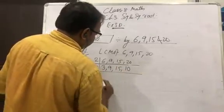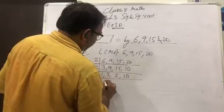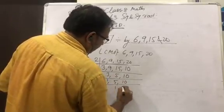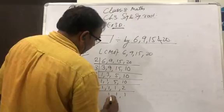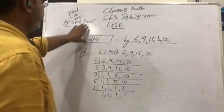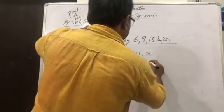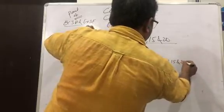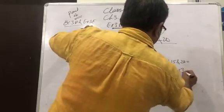Now we divide by 3, giving 1, 3, 5, and 10. Then divide by 3 again: 1, 1, 5, and 10. Then divide by 5: giving 1, 1, 1, and 2. So the LCM of 6, 9, 15, and 20 is equal to 2 × 2 × 3 × 3 × 5.